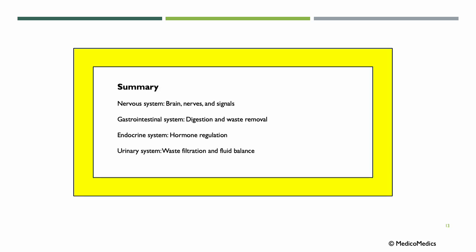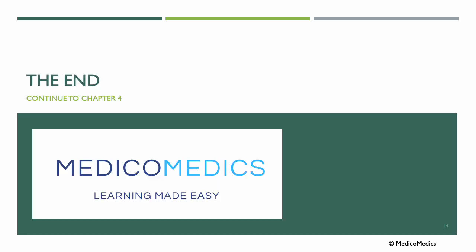Let's end with a brief summary. The nervous system covered the brain, nerves, and signals. The gastrointestinal system: digestion and waste removal. Endocrine system: hormone regulation. Urinary system: waste filtration and fluid balance. That's the end of this lecture — continue now to chapter number four.